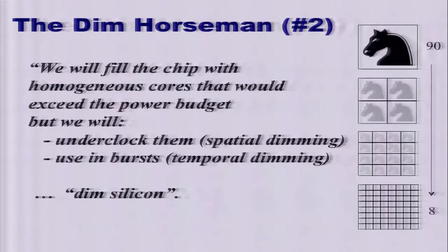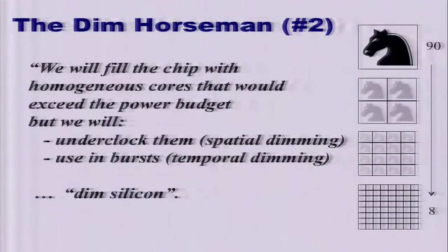The second horseman is what I call the dim horseman. The idea is to keep chip area constant but severely underclock the chip or use it in bursts. In the underclocked version — spatial dimming — we might have all cores enabled, but as we scale down from 90nm to smaller nodes, we get more cores that are progressively less lit up. The other variant is temporal dimming: you light all the cores up in bursts, let them cool down, then repeat — a burst mode where the chip gets too hot, you let it cool, then fire again.